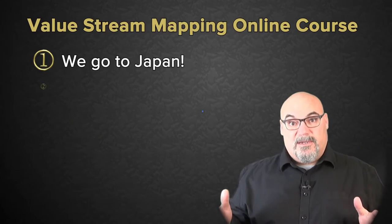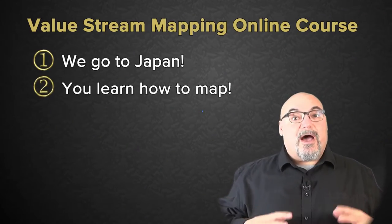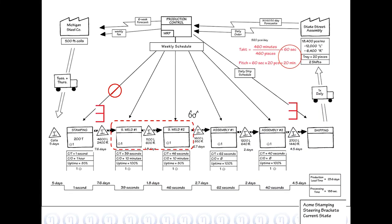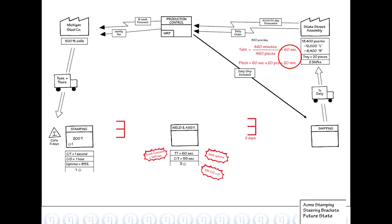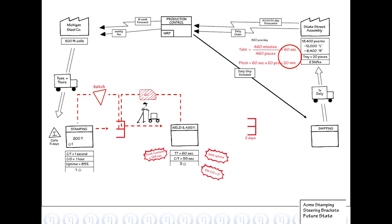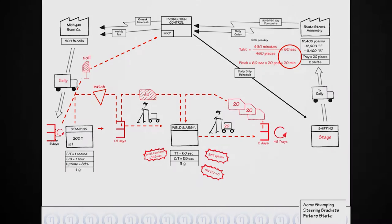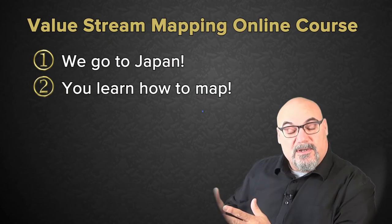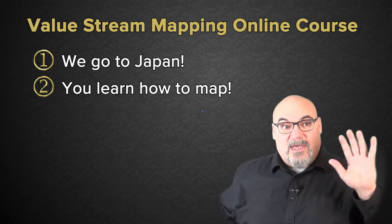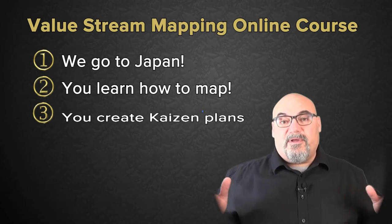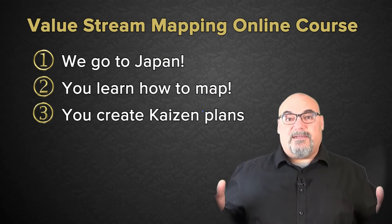I'm going to show you how to look and how to map. You're going to do a current state, then a future state. Then you're going to create these things called Kaizen bursts, which talk about what you need to do to go from current to future. And after that, you create an action plan to get there.